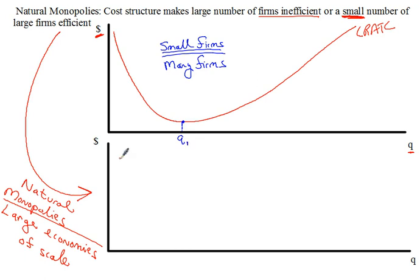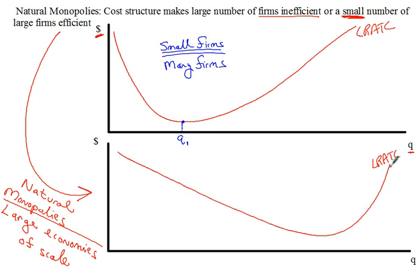Now let's think about the other extreme. The long run average total cost curve might look like this — still sloping down, hitting a minimum, and then rising, but it takes lots and lots of production to lower the average total costs. For this firm, quantity is on the horizontal axis and average total cost is on the vertical axis. If this firm wants to minimize long run average total costs, they're going to have to produce at very high levels of production.